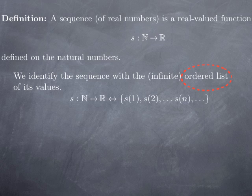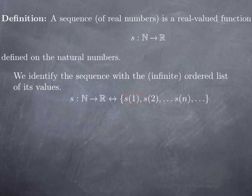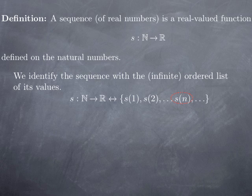The first term in the sequence is the image of 1, the second term is the image of 2, and so on. We can completely determine the function by looking at the images s(1), s(2), and so on. So we have the first term, the second term, and the nth term. Very often when we talk about sequences, we're going to take a variable that is a natural number — n, k, or i — and use it as a generic way of denoting the place in the sequence, so it's the nth term where n can take different values.